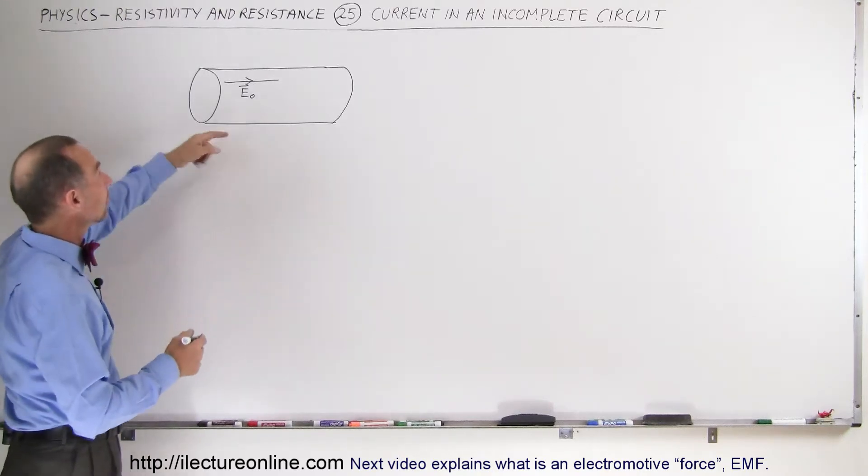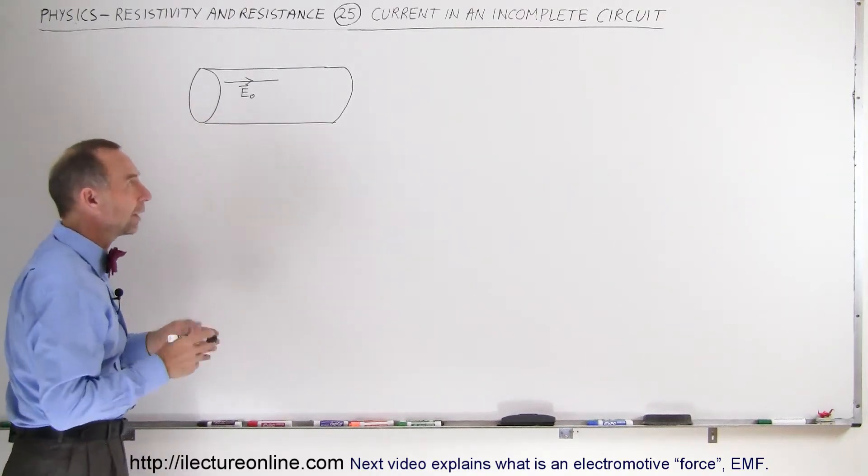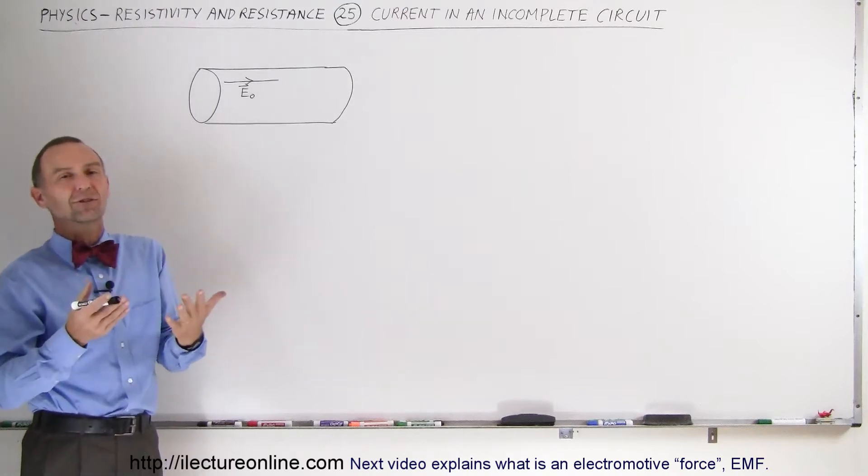For example, let's say initially we put an electric field across a conductor that has free charges ready to roam around. Now let's for a moment assume that these free charges are positive charges.